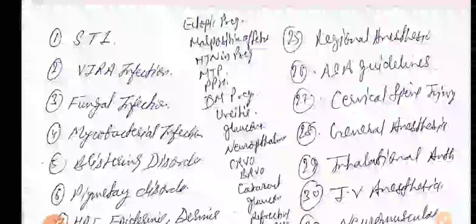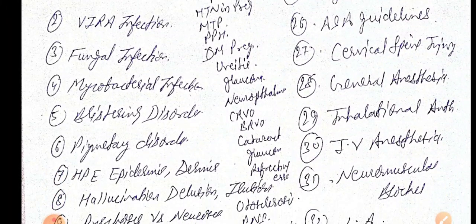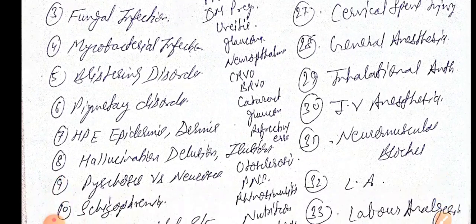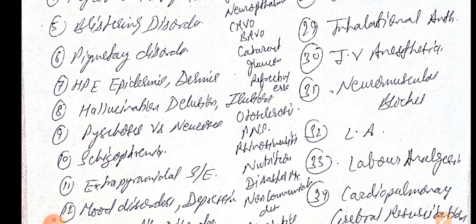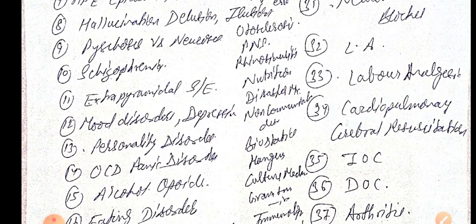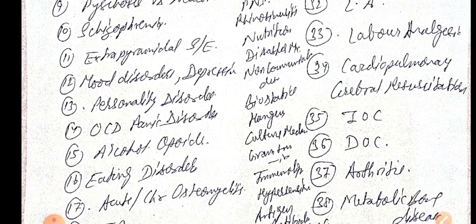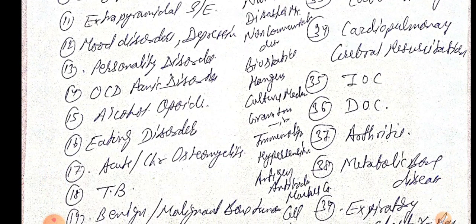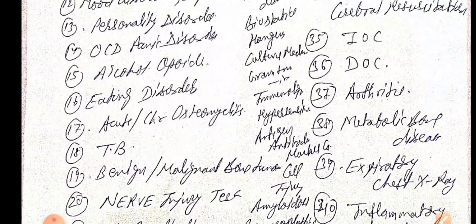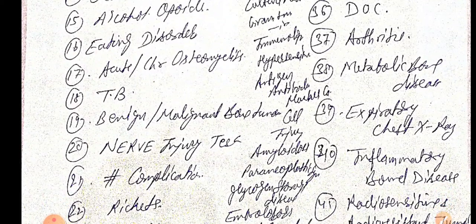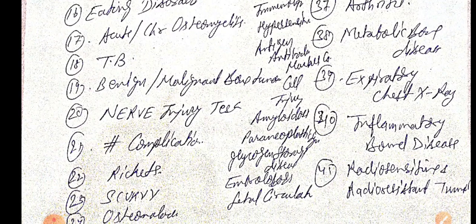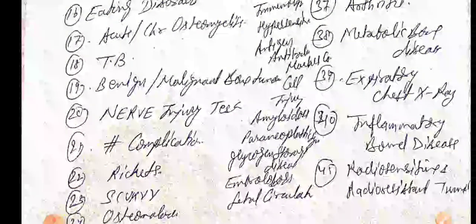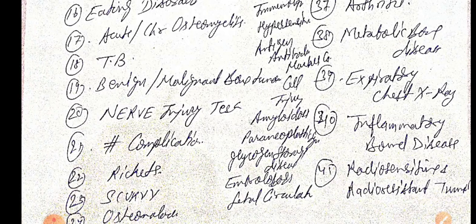Gynecology and obstetrics high-yield topics include CA ovary, endometrial carcinoma, menstrual physiology, PCOS, pelvic inflammatory disease, vulvovaginitis, amenorrhea, fibroid, endometriosis, adenomyosis, infertility, ectopic pregnancy, malpresentation of fetus, hypertension in pregnancy, MTP, PPH, and diabetes in pregnancy. Ophthalmology covers uveitis, glaucoma, neuro-ophthalmology, CRAO, BRAO, cataract, and refractory errors. ENT includes otosclerosis, PNS X-ray findings, nutrition, disaster management, non-communicable diseases, and biostatistics.